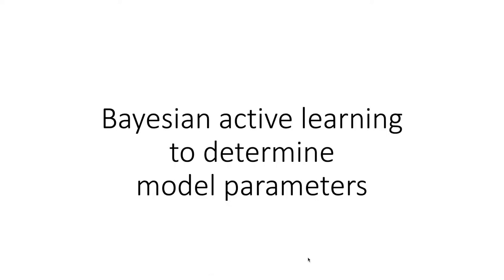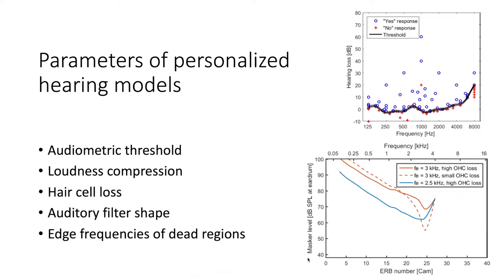In audiology, we are primarily not interested in a model for the average listener. What we want to know are the individual parameters for a hearing-impaired person so that we can use a personalized hearing model for our applications. Active learning provides mechanisms to determine those individual parameters efficiently. A simple model of hearing impairment is the audiometric threshold, which is probably used most often in clinical practice. More sophisticated models take into account loudness compression as a function of frequency, hair cell loss, auditory filter shapes, or edge frequencies of dead regions. I will talk about dead regions because that test is an interesting example.